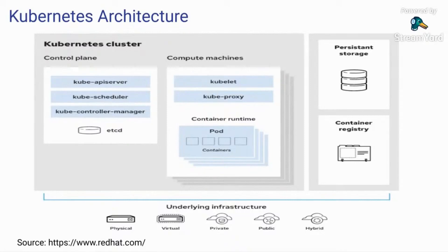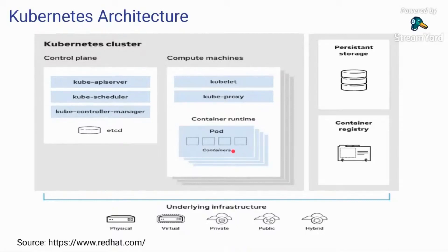Kubernetes is also a way of easily packaging your application and doing champion-challenger deployments. Coming to the pod — a pod is the simplest unit in Kubernetes and represents a single instance of an application. One pod is one application. You don't want two different applications sharing the same pod — that's typically not the right architecture. This fits into the microservice architecture we talk about.